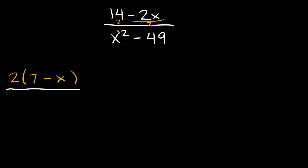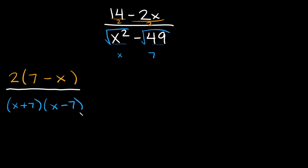Now let's factor the bottom — x squared minus 49. This is a difference of squares. x squared is a squared term and 49 is also a squared term. The shortcut is to take the square root of each term: square root of x squared is x, and square root of 49 is 7. So x squared minus 49 factors to (x plus 7)(x minus 7).